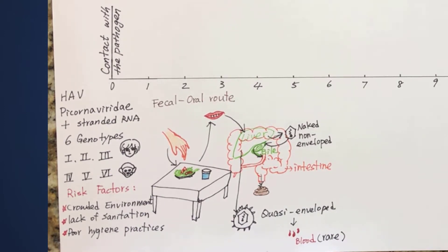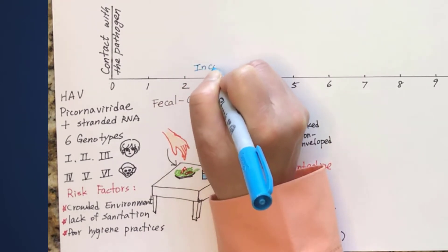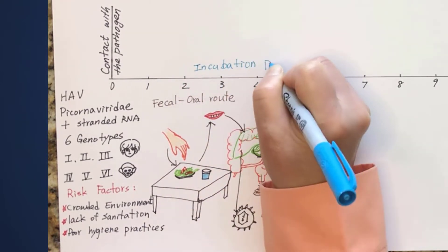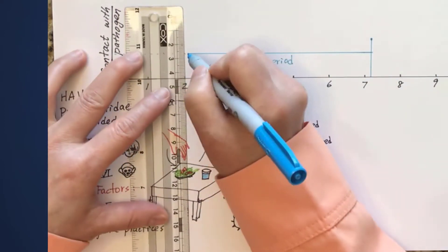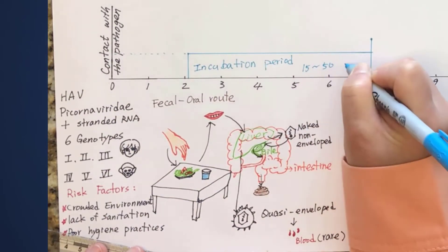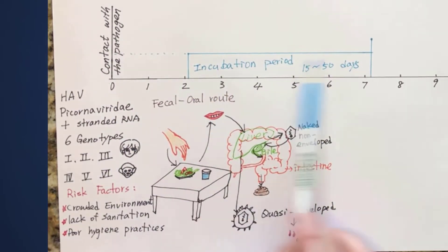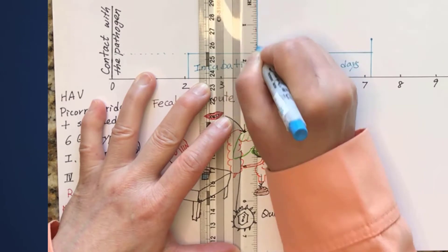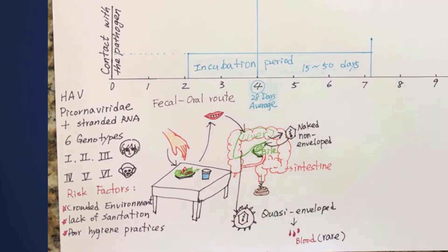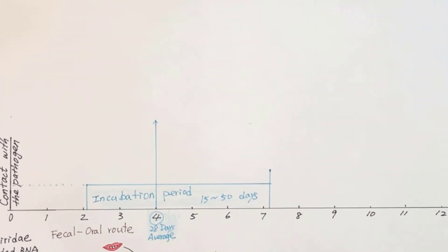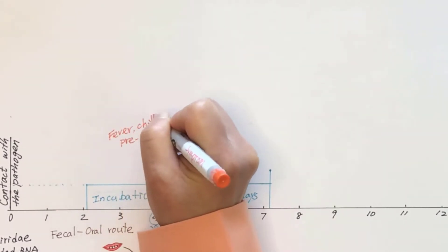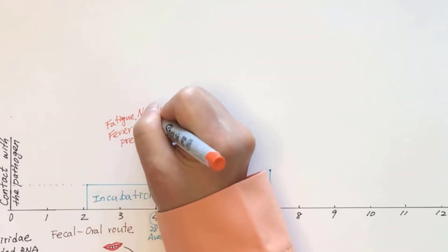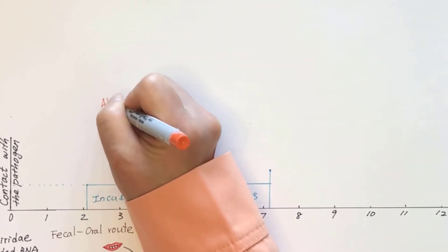While liver cells are busy making more viruses, the infection is first at the incubation period until the onset of disease when the infected person exhibits clinical symptoms. The incubation period for hepatitis A ranges from 15 days to 50 days, with an average of 28 days. At the onset of the infection, the person experiences pre-icteric symptoms, including fever, chills, fatigue, nausea, anorexia,